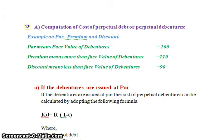Premium means more than the face value of the debenture. So if face value is 100 rupees, premium might be 110 rupees. Discount means less than the face value of the debenture — so if face value is 100 rupees, discount means it might be 90 rupees. This is the example on par, premium, and discount.